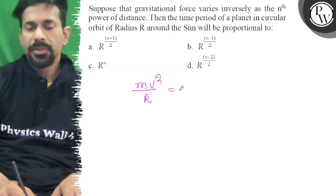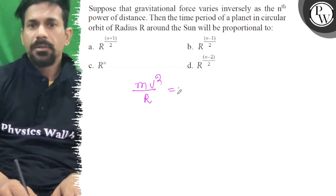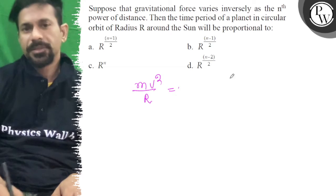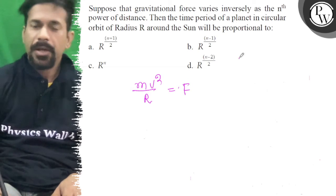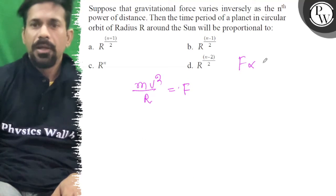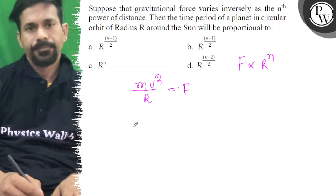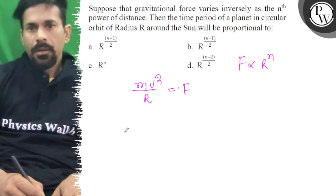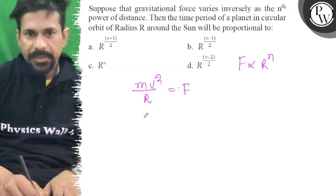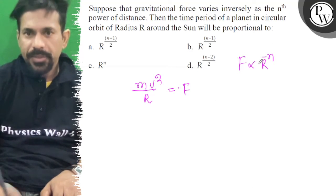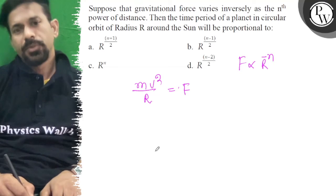Now the attraction force is inversely proportional to nth power of distance. So F is inversely proportional to the nth power of the distance, i.e. r to the power n. We can write that it is inversely proportional to r to the minus nth power of the distance.